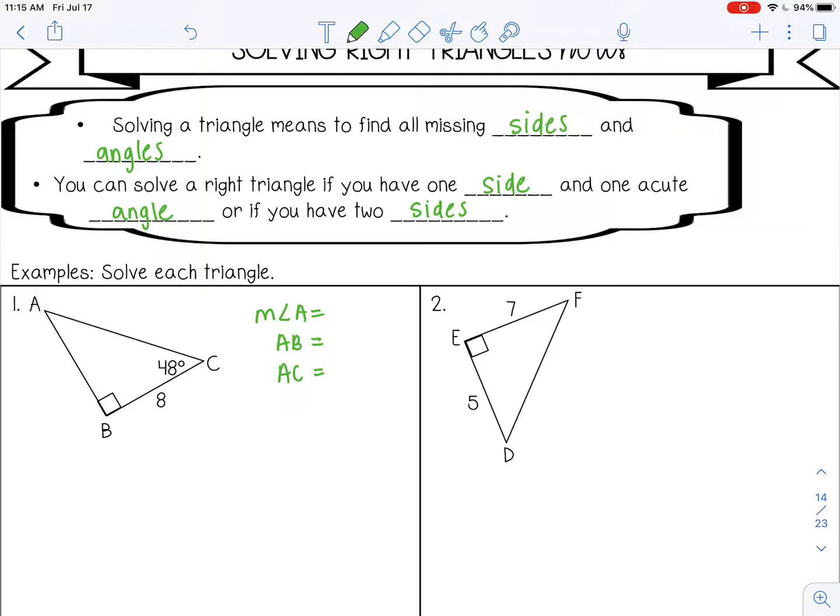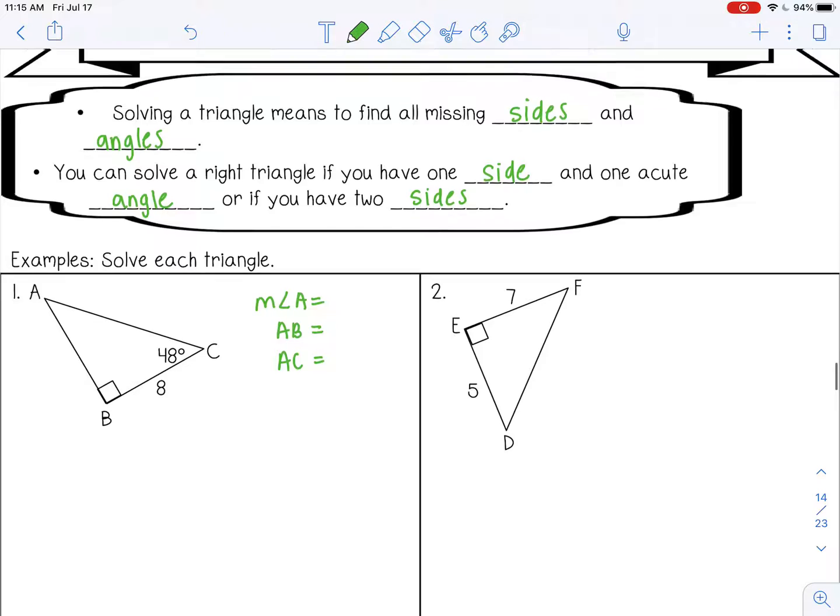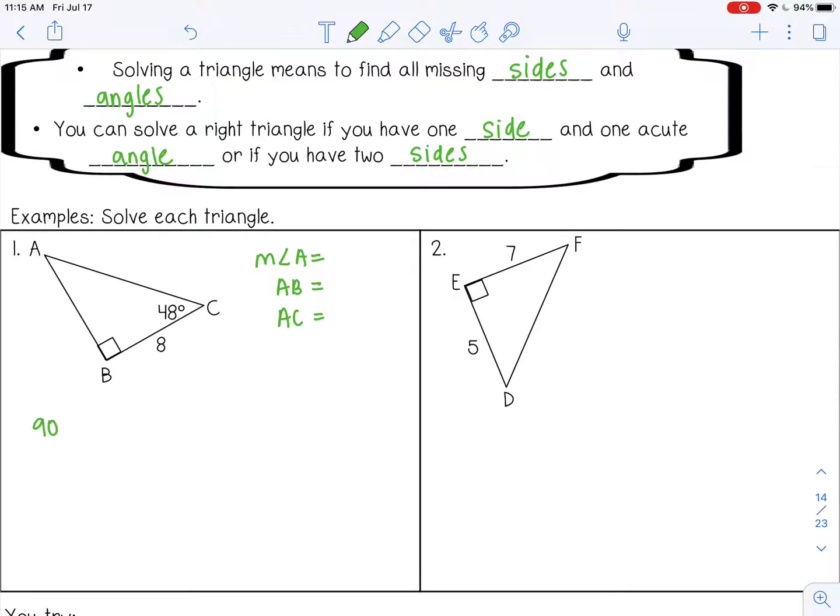Now if you're given an acute angle, the easiest thing to do is solve for the other acute angle first. Because all you have to do is take 90 minus 48. Remember the two acute angles in a right triangle are complementary, so they add to 90. So that would be 42 degrees.